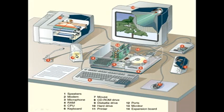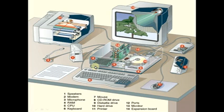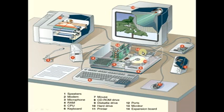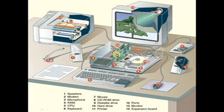There are lots of devices. Number one is speakers. Number two is modem. Number three is microphone. Number four is RAM. Number five is CPU — this is the main important thing. Number seven is a mouse. Number eight is a CD-ROM drive. Number nine is a disk drive. Number ten is the hard drive — we also call this a hard disk. Number eleven is a printer. Number twelve are the ports and cables. Number thirteen is the monitor — there are CRT monitors, though nowadays we don't use those much. Number fourteen is expansion slots, like AGP or sound cards.